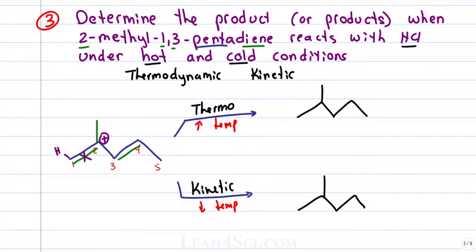The kinetic product doesn't touch that second pi bond so just redraw it as you see it and put the halogen on the carbocation position, you're done. The thermodynamic product has a resonance stabilized intermediate if that final pi bond will be more substituted and therefore more stable. The quick and easy trick is to place a pi bond between the two carbons that used to be on opposite pi bonds.